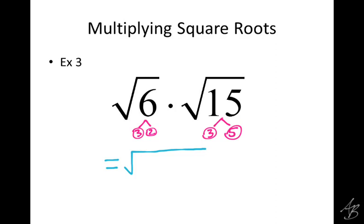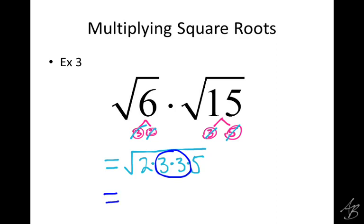So we're going to combine all of these together and put them in order from least to greatest. What's going to come first? The two. Then three times three. So we put all of these together in one square root: two times three times three times five. Now we simplify just like any other square root. What do we have a pair of? A pair of threes. That three goes on the outside, and what's left on the inside is two times five, which is ten. So we get three square root of ten.